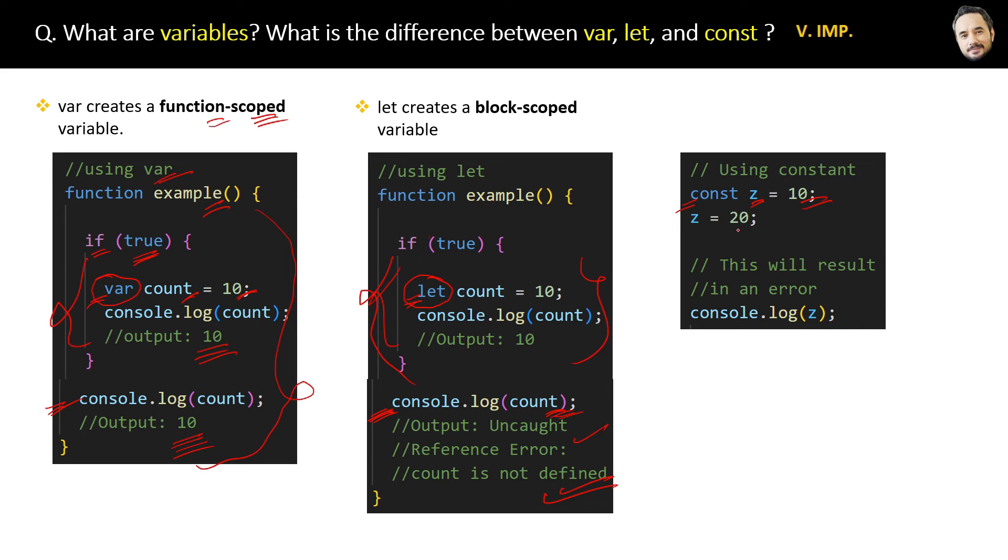But then our program will throw an error while logging. The reason is const can be assigned only once and its value cannot be changed afterwards. Therefore use const when you do not want to change the value of a variable after the first assignment.